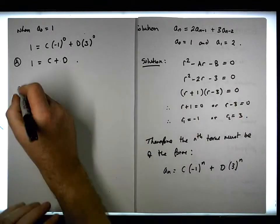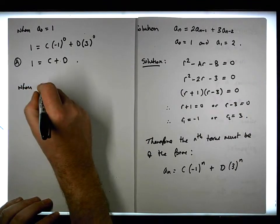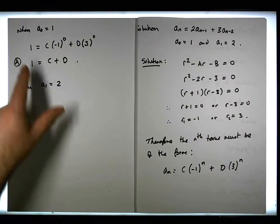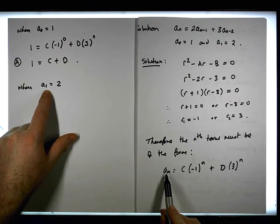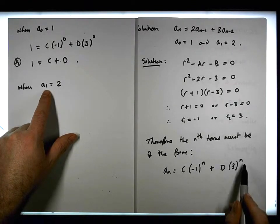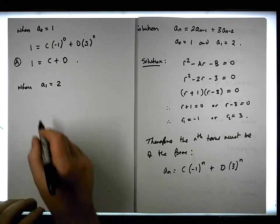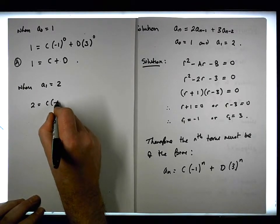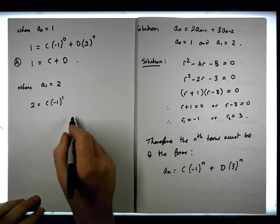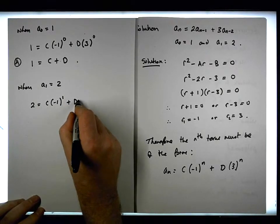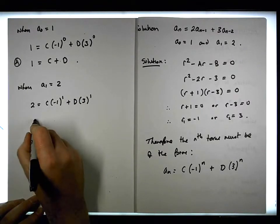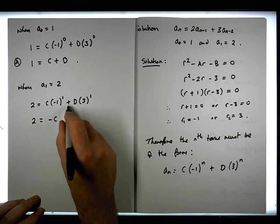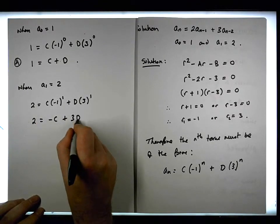Under the second condition, when a_1 equals 2, we're evaluating at index 1. We have that 2 must be equal to c times minus 1 raised to the power of 1, plus d times 3 raised to the power of 1. That gives us 2 must be equal to minus c plus 3d. This is equation (b).